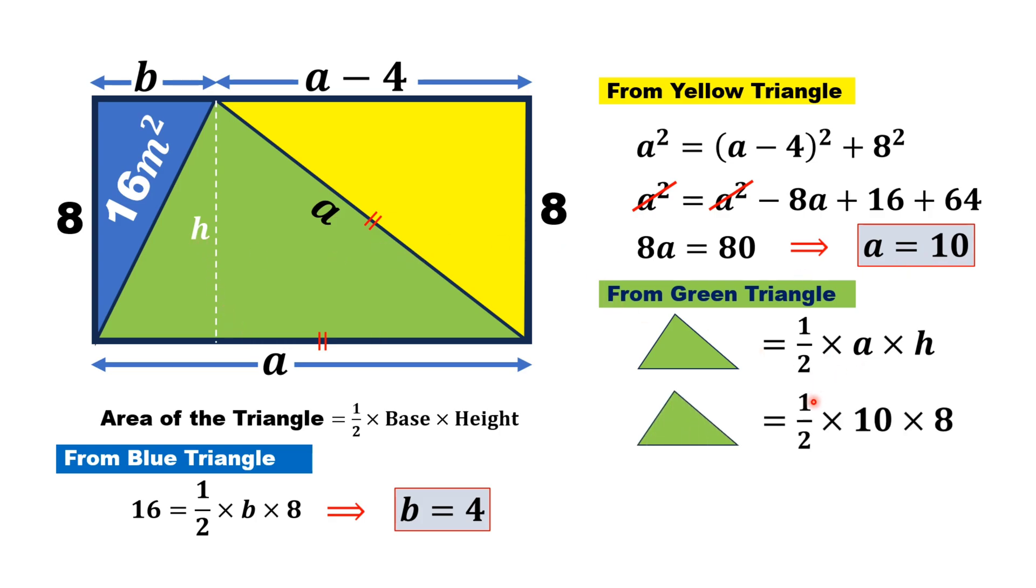Substituting these values, we get the area of the green triangle equals half times 10 times 8, which equals 40 meters square. That's the answer. Thank you for watching.